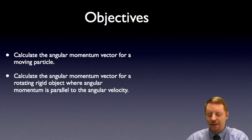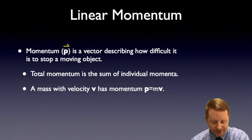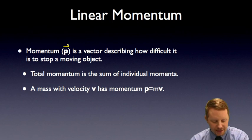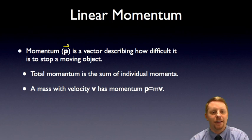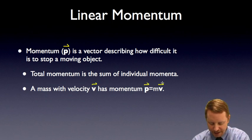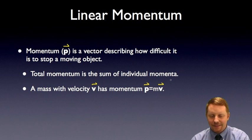Let's start by talking about linear momentum. Momentum, p, is a vector describing how difficult it is to stop a moving object or to change the velocity of an object. The total momentum of a system is going to be the sum of all the individual momenta of the objects in that system. A mass with velocity v has momentum p equals mass times the velocity vector, where the direction of the momentum vector is going to be in the same direction as the velocity vector.